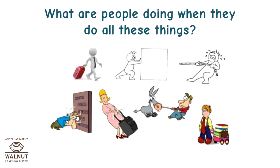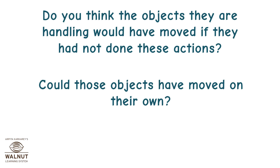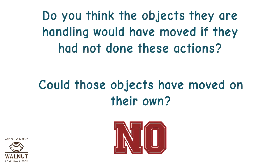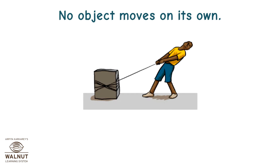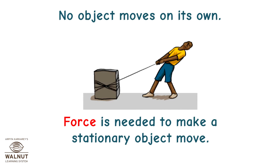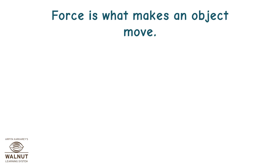What are people doing when they do all these things? Do you think the objects they are handling would have moved if they had not done these actions? Could those objects have moved on their own? No. What is needed to move those objects then? Some force. No object moves on its own. Force is needed to make a stationary object move. A stationary object is an object that is not moving. Force is what makes an object move.